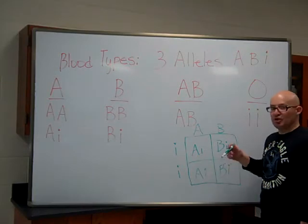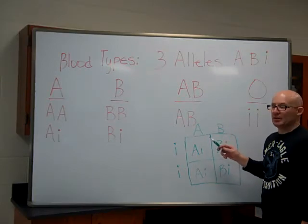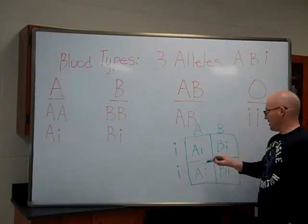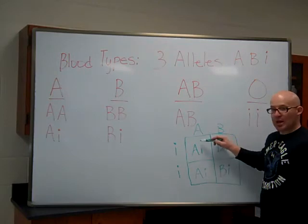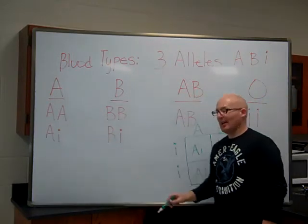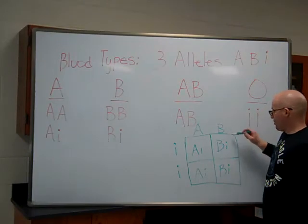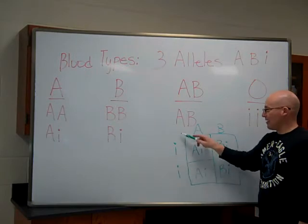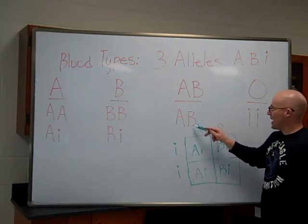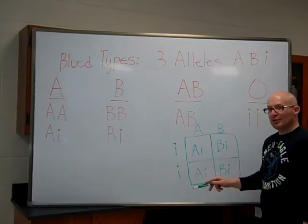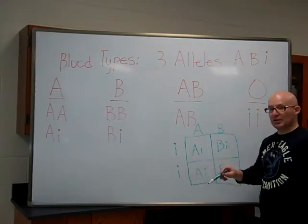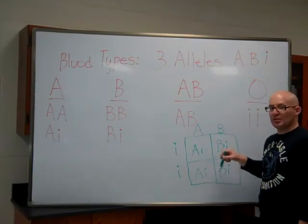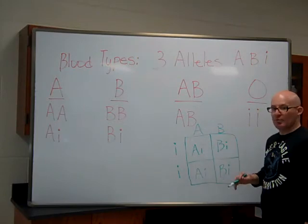So we have two possible genotypes from this cross. Parents with type AB blood and type O blood can only have these two potential offspring: two with type A blood with genotype big A, little i, and two with type B blood with genotype big B, little i. None of the offspring will have the blood type that either parent carried — this parent was type AB and this parent was type O. That's how blood type genetics work with three alleles.